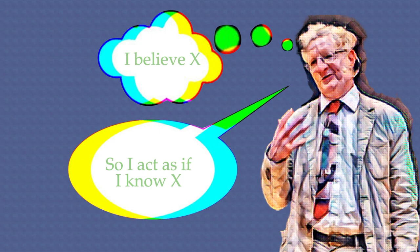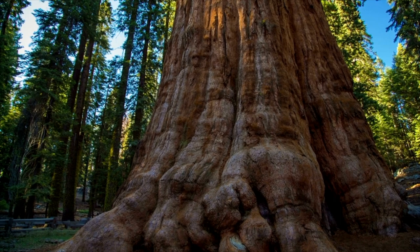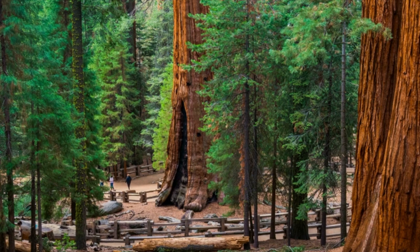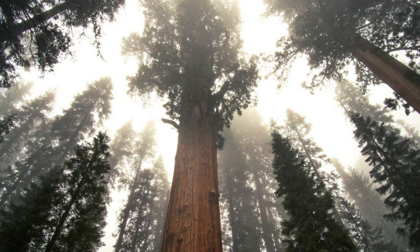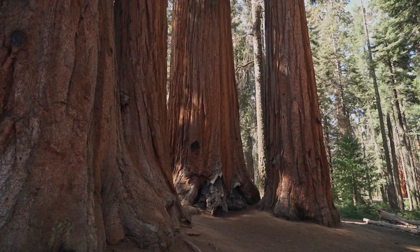For example, Williamson says to believe something is to treat it as if you know it. If I believe there's a giant sequoia in front of me, then I'll walk around if I need to get to the other side — I won't foolishly walk straight ahead. And if someone asks what kind of tree that is, I'll say it's a sequoia. These are the behaviors of someone who takes himself to know there is a giant sequoia in front of him. Of course, sometimes we get things wrong. If this were actually a cedar, then I've got a false belief. But still, Williamson would say my belief was an attempt at knowledge — an attempt that misfired, sure, but I was aiming at knowledge. And that's what a belief is.